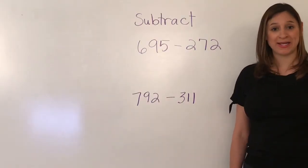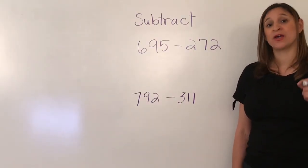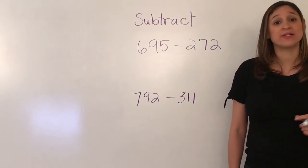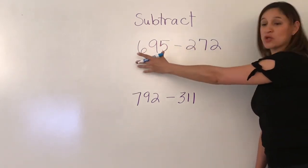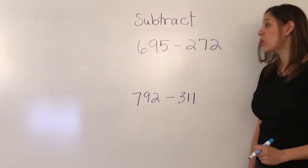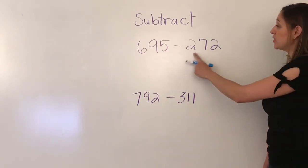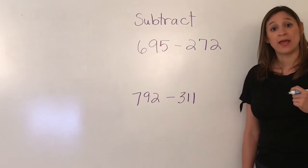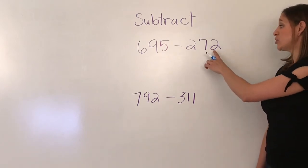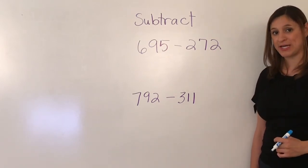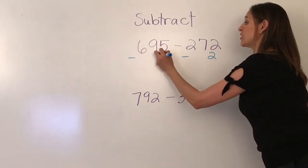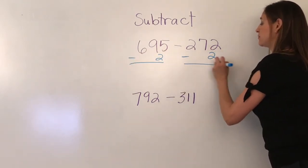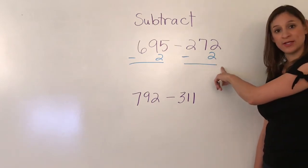Unlike when you were adding, when you subtract your strategy will be different. Now you will look at the number being subtracted by the whole. Here I have 272. I know that 2 is less than 5, so I am going to subtract 2 from both sides to make this a friendly number.